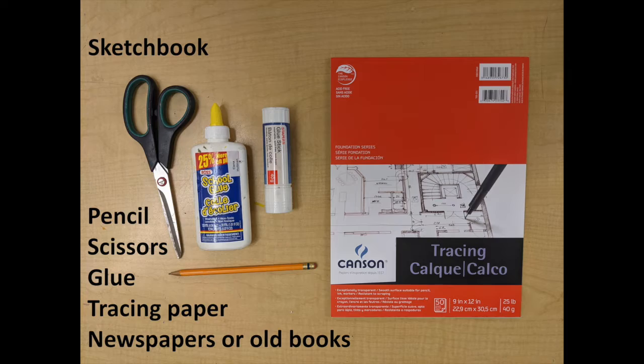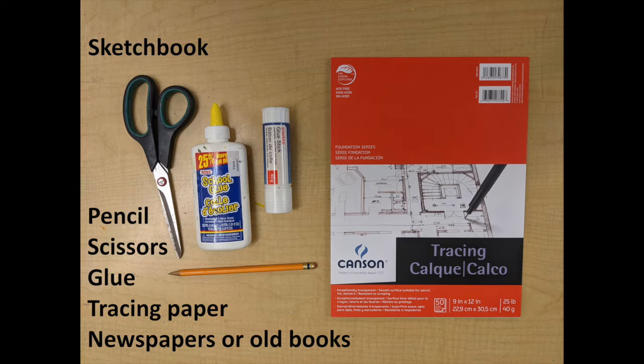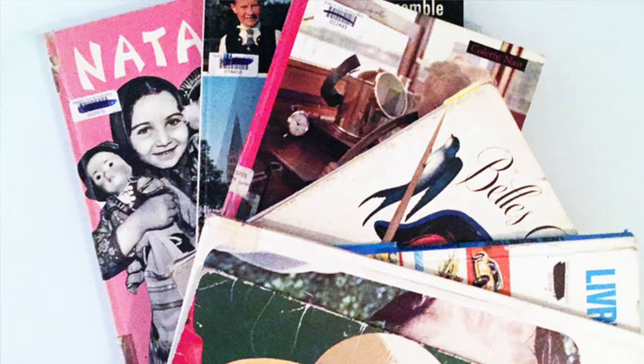For our activity what you'll need is a sketchbook or a scrapbook, a pair of scissors, a glue stick, or some regular glue. But the most important things you need are archives or resources or things that we can look through to create our imagery.